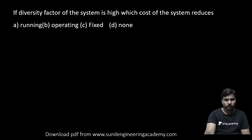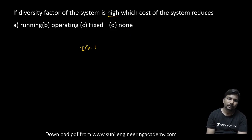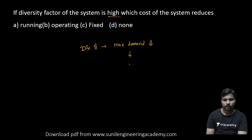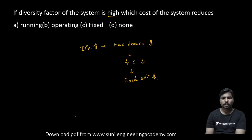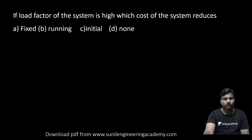Next question: if the diversity factor of the system is high, which cost of the system reduces? As I just explained — diversity factor is more means maximum demand is less, installed capacity is less, and therefore fixed cost is less. So a high diversity factor reduces the fixed cost.